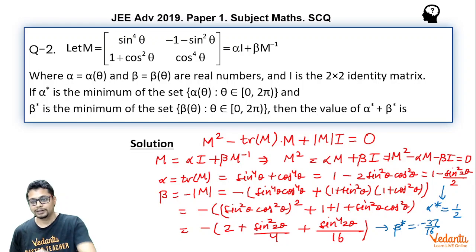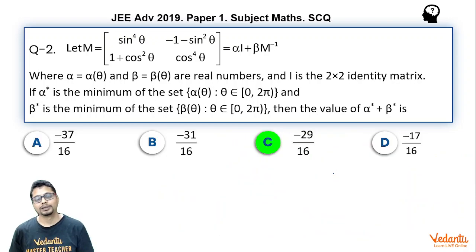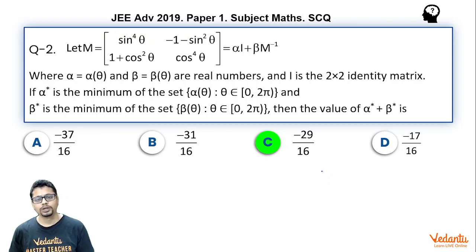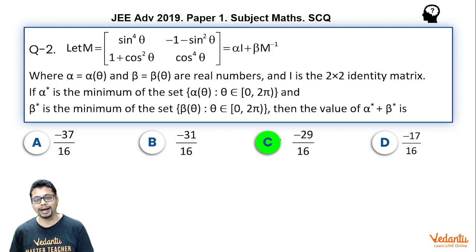So the answer is option C: −29/16. There is also an alternate solution. If you don't know Cayley-Hamilton theorem, you can find M inverse as adjoint of M divided by determinant of M, then compare elements on both sides to find alpha and beta in terms of theta, and hence find their minimum values and sum.